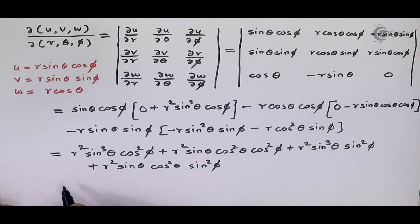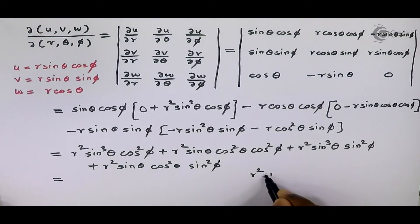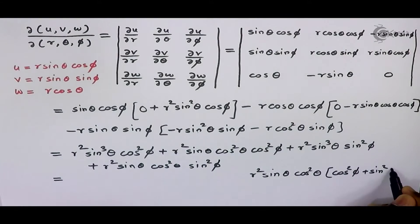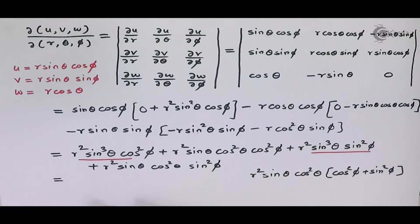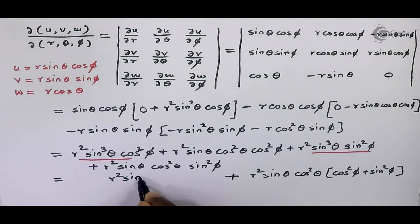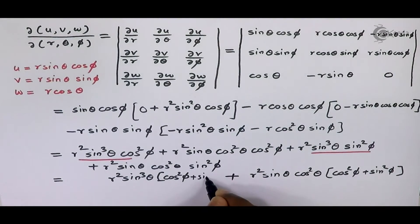After solving this, if you observe that in these two terms we have r² sine theta and cos square theta. So I am taking it outside, and inside the bracket cos square phi will remain from the first term and sine square phi will remain from the second. Similarly, in the other two terms r² and sine cube theta are common, so we get r² sine cube theta, and inside the bracket cos square phi and sine square phi will remain.